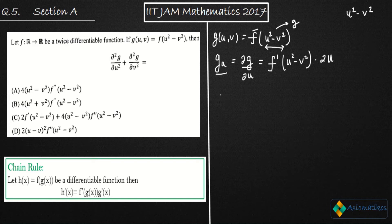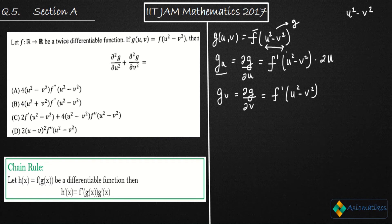Now if I evaluate g_v — the partial derivative of g with respect to v — I again apply the chain rule. First differentiate f to get f'(u² - v²), then differentiate u² - v² with respect to v, which gives -2v. So g_v = f'(u² - v²) · (-2v).